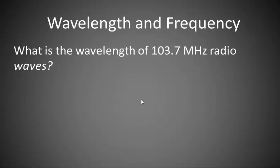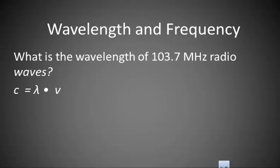So if I want to know the wavelength of 103.7 megahertz radio waves, I can use my original equation and rearrange that for wavelength or lambda. So to get lambda by itself, I'm going to divide both sides by nu. That gives me lambda which equals c over nu. C is always 3.00 times 10 to the 8th meters per second.